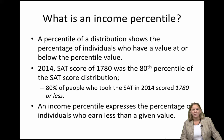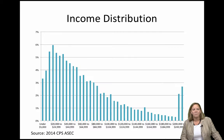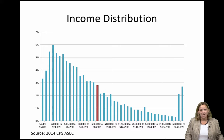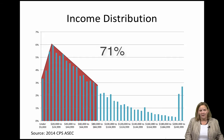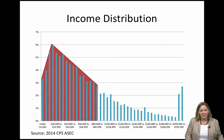Now let's go through an example of a percentile of the family income distribution. Suppose we wanted to know how many people earned up to $85,000 in a given year. From the graph shown here, we can see that the share of people to the left of the red box, which represents the income grouping just below $85,000, includes 71% of the population, adding up all the bars to the left. Therefore, the 71st percentile of the income distribution is $85,000.